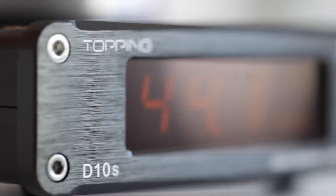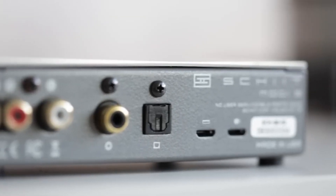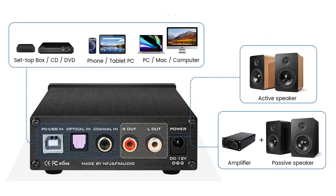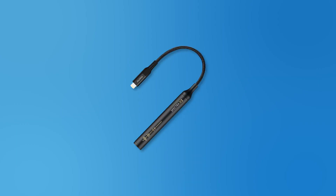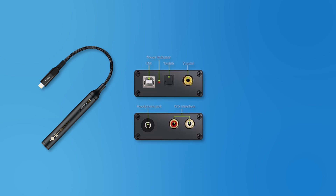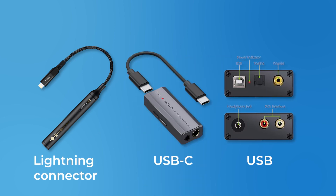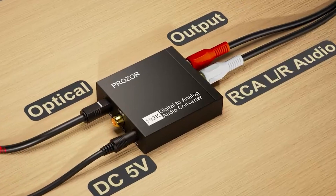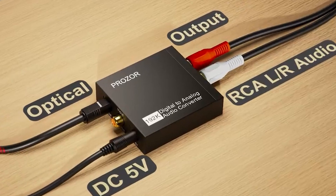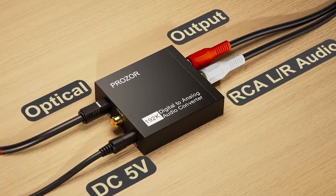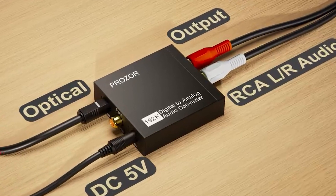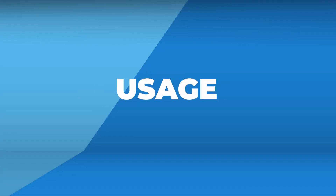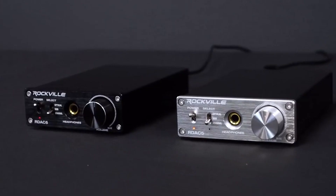How do you choose the right DAC for your device? First, consider compatibility: ensure the DAC matches your input device. Different connectors like Lightning, USB, and USB-C are tailored for iPhones, computers, and Android devices respectively. Also confirm compatibility with your output device, such as headphone jacks or RCA connectors.